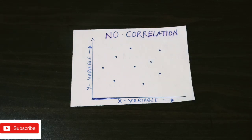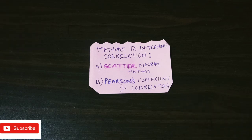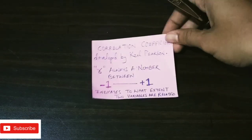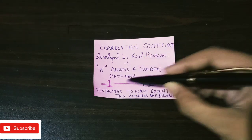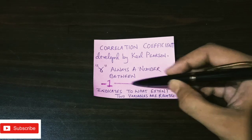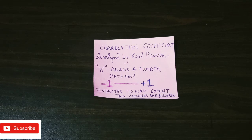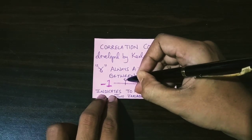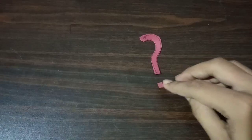Now we will see the second method: Pearson's coefficient of correlation. This method is also used to determine correlation between two variables. It was developed by Carl Pearson. The correlation coefficient is denoted by the symbol R, and it is always a number between minus 1 and plus 1. Minus 1 denotes perfect negative correlation, plus 1 denotes perfect positive correlation, and 0 means there is no correlation between the two variables.